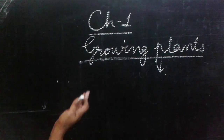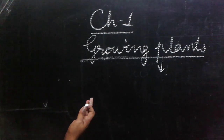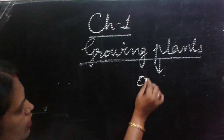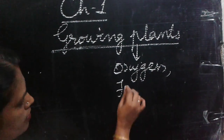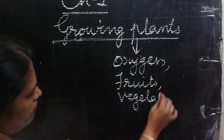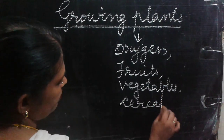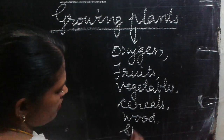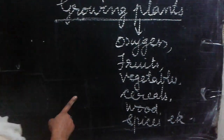Before we start, let me ask one thing. How are plants useful to us? The plants give us oxygen to breathe. Then fruits, vegetables, cereals, wood, spices, etc. So many things they provide.